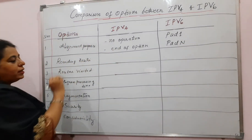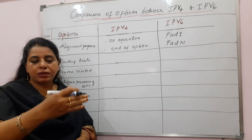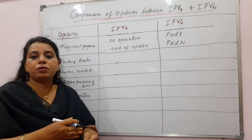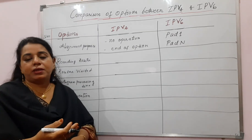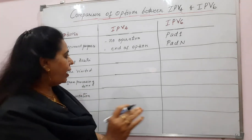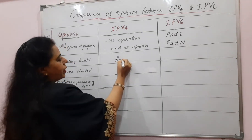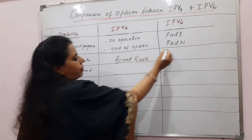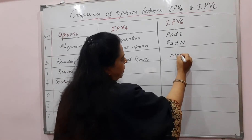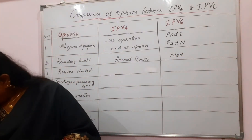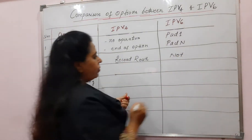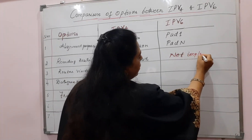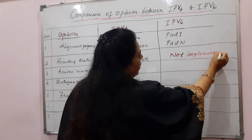For recording the route from source to destination — which are the different routers to record — in IPv4 we have the option called Record Route. In IPv6, it is not implemented. Wherever not implemented, I will write it in red ink.